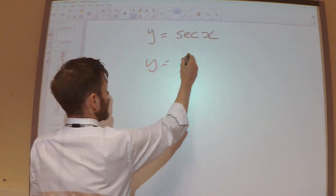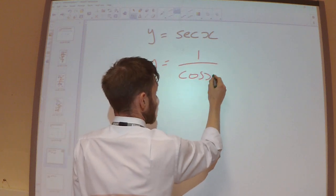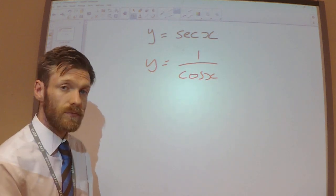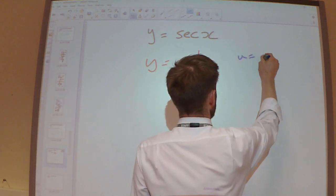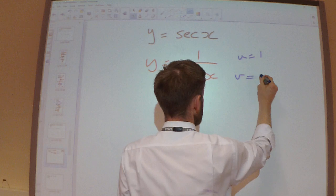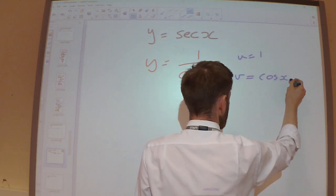Let's do sec as 1 over cos. Now we're going to do the quotient rule. So let's let u equal 1, v equals cos x.